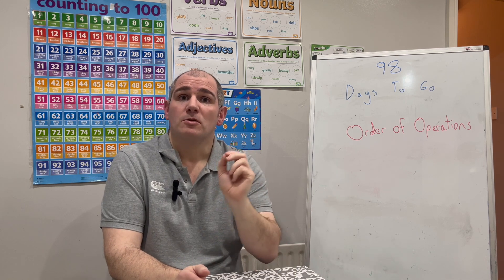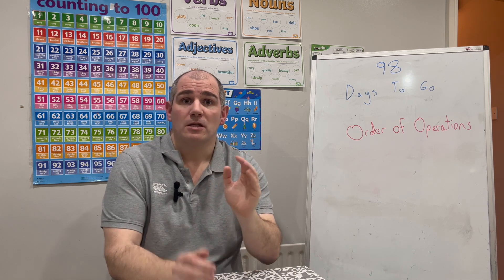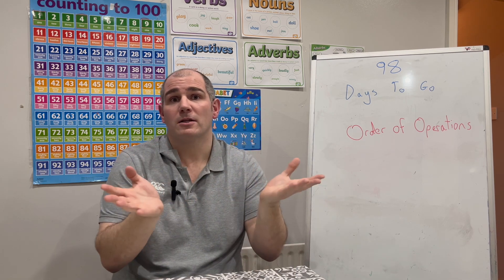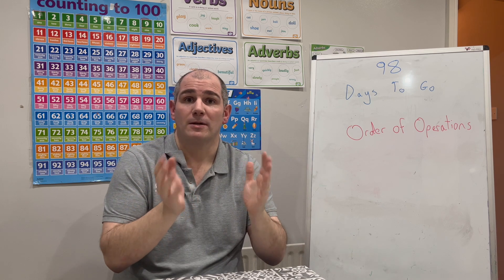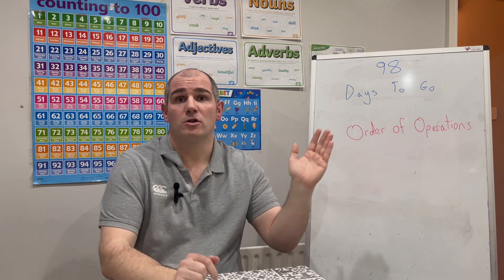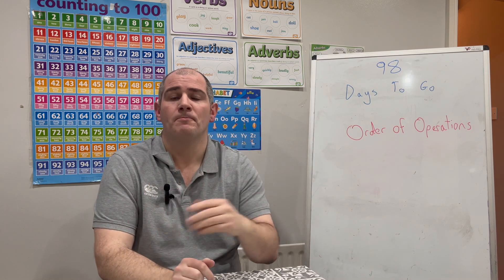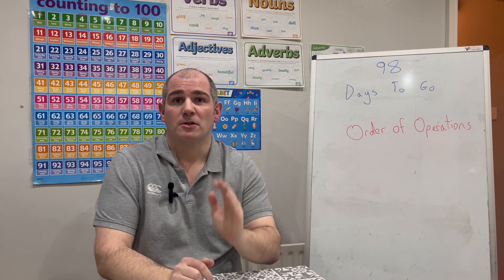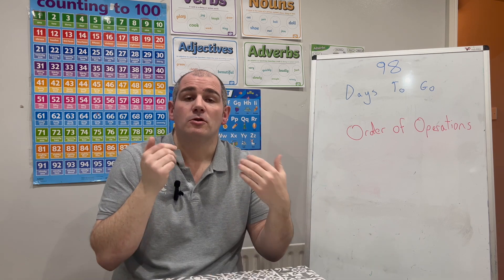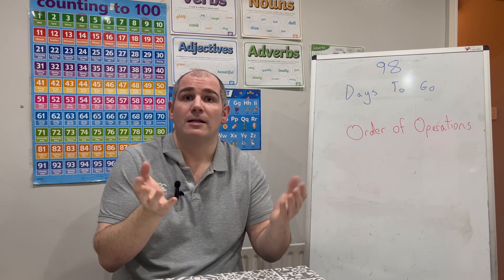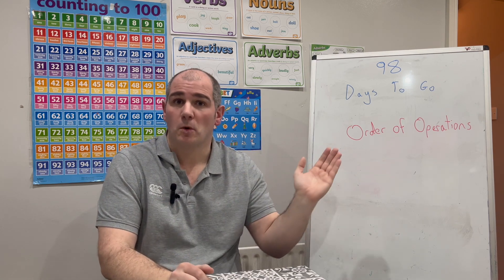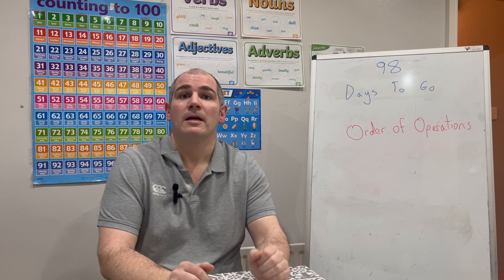Then you've got your divisions and multiplications — these are equally important, so if a calculation has just got multiplications and divisions, you work from left to right. And then finally you've got your additions and subtractions. Remember, if a calculation has just got additions and subtractions, you also work from left to right.